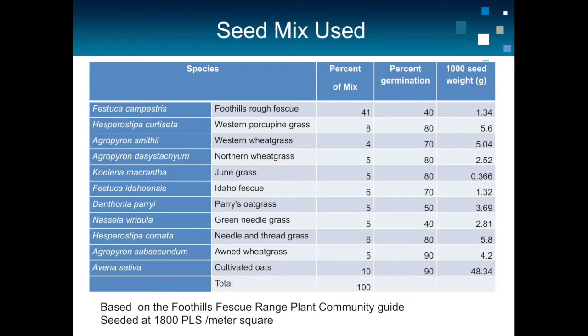When we devise the seed mix, we base it on the seeding rate in pure live seeds — not just 10 kg/ha or 18 kg/ha. To figure your seeding rate you need the 1,000 kernel weight, because germination multiplied by purity gives you pure live seeds. Two percent of June grass by weight is not the same number of seeds as 2% of western porcupine grass, because fine seeds can have millions per gram compared to thousands in heavier seeds.